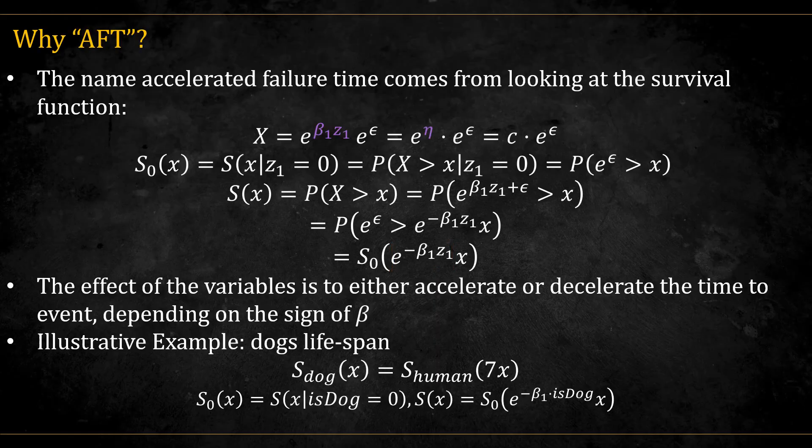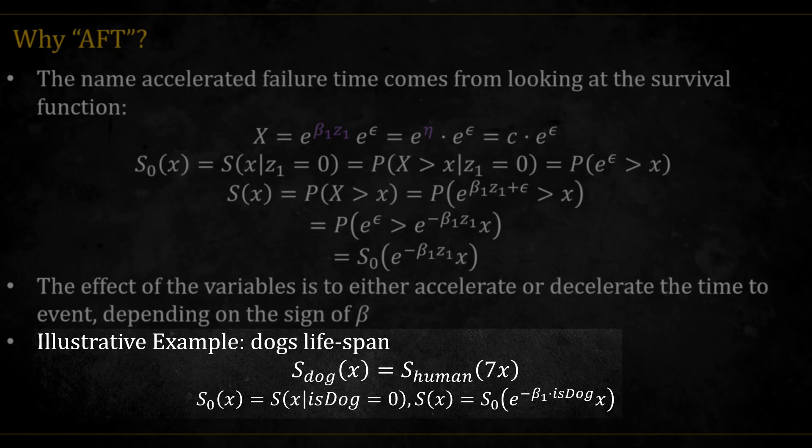So, depending on the sign of beta, the risk factor z either accelerates or decelerates the time to event. An illustrative example can be thought of as the survival of dogs. It is said that the human year is equal to seven dog years. Suppose our z is are you a dog or not, and that s0 is when you are not a dog, meaning you are a human. Then the survival function of dogs is like that of humans, only accelerated.